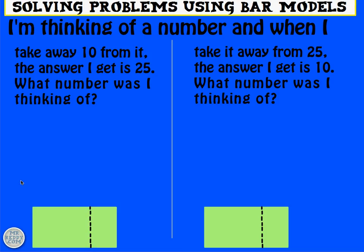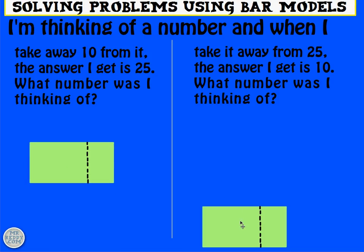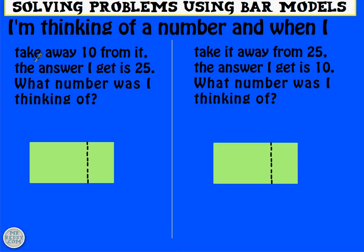Two very similar looking examples, but with a subtle difference. So in the first one, I'm thinking of a number and I take away 10 from it. Here's the 10 that we're taking away. But in this one, I'm actually taking away the x and it's the 25 that I'm taking away the x from.